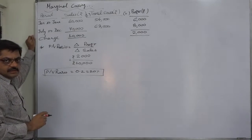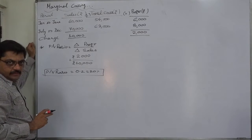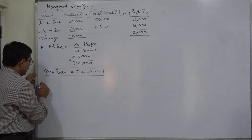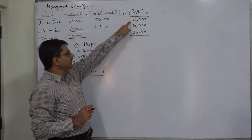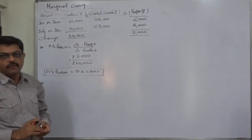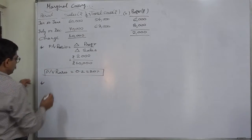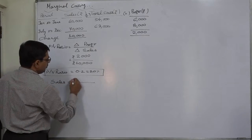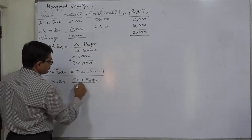The PV ratio will remain constant as long as there is no change in selling price per unit or variable cost per unit. Now we have three things: sales, profit, and PV ratio. If we substitute these three in the formula for sales, we can find the fixed cost: sales equals fixed cost plus profit, divided by PV ratio.